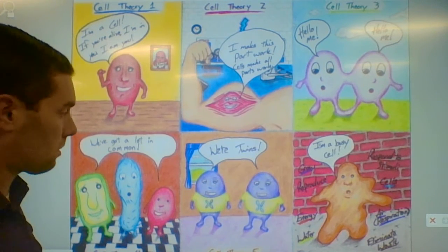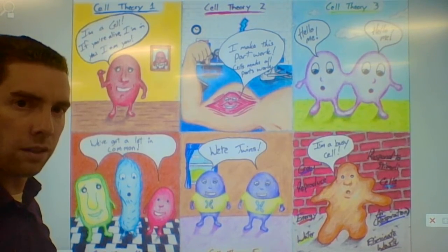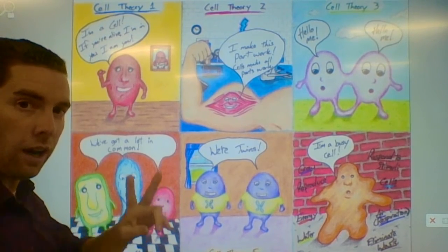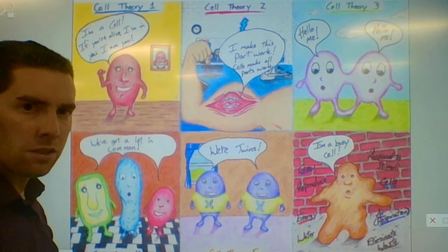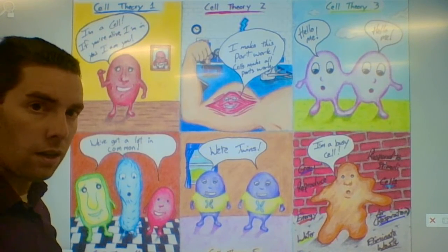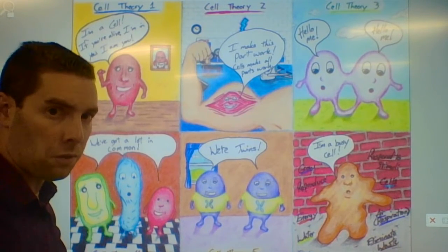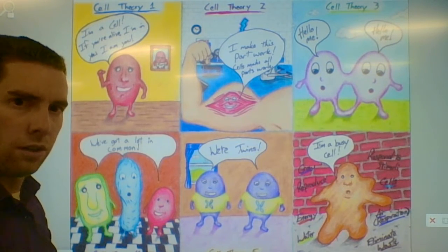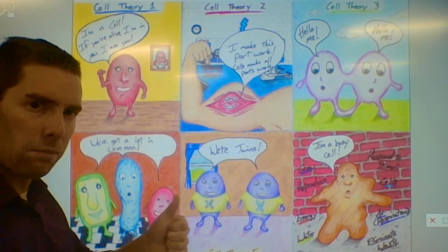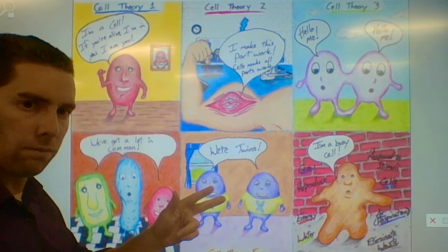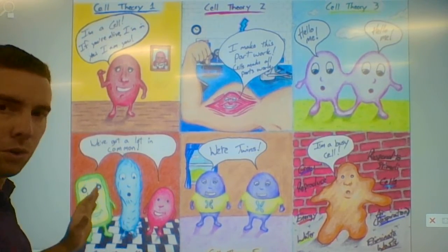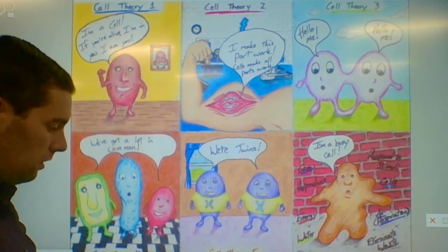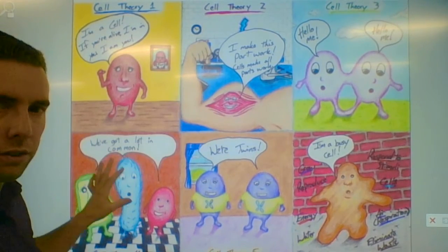Cell theory number four is difficult to understand — it means that all cells have some things in common with each other. In this picture I have a plant cell, a protist (the 'hairy peanut' — that's the paramecium), and an animal cell like one of our cheek cells. The idea is that they all have the same types of organelles. Every cell — whether it's bacteria, in a plant, in your dog, or in a worm — they all have ribosomes, cytoplasm, and a cell membrane. They're similar in their internal structure even though outwardly they look different.